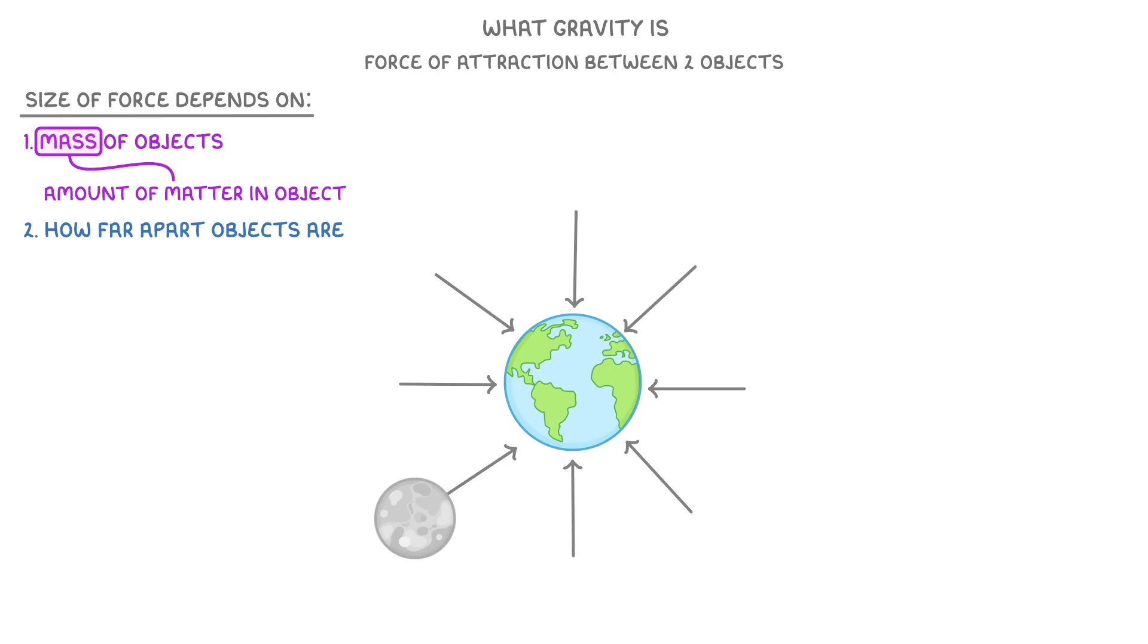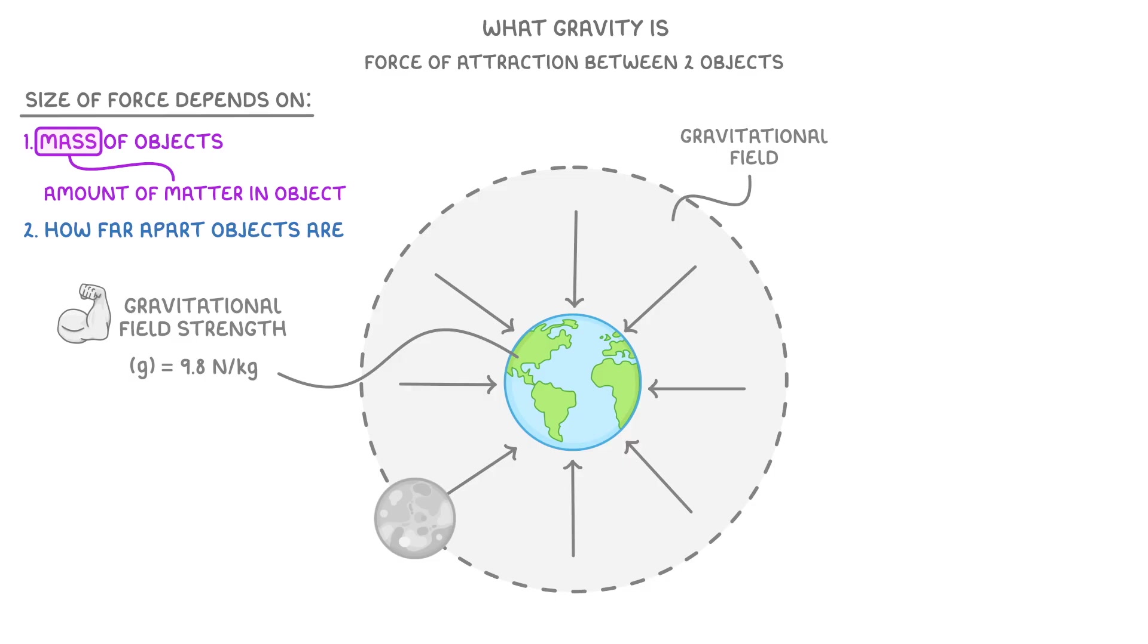We call this field of influence around an object its gravitational field. The strength of this field is called the gravitational field strength, which we show with the letter g. For Earth, this is around 9.8 N per kg, sometimes rounded up to 10.